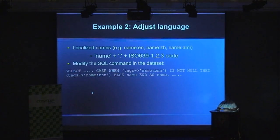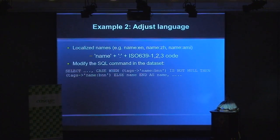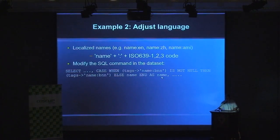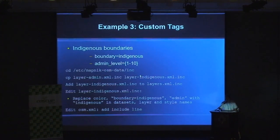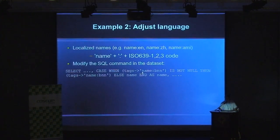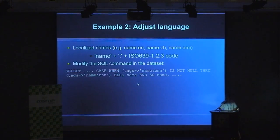We can copy the OSM file over and create a new layer on the map. Creating the new layer involves multiple steps. Basically, you replace the select command in the dataset. Normally it's just 'name' in the select field. You replace this with a CASE WHEN statement using tags — this references the HStore. So if the custom language tag is not null, it uses that tag; otherwise it falls back to the default name tag. That's the only modification needed — it's very easy.